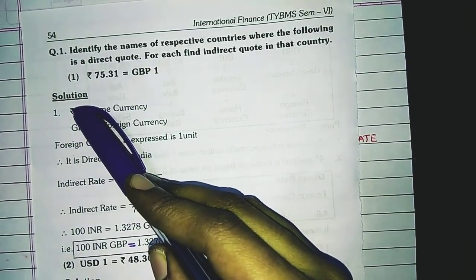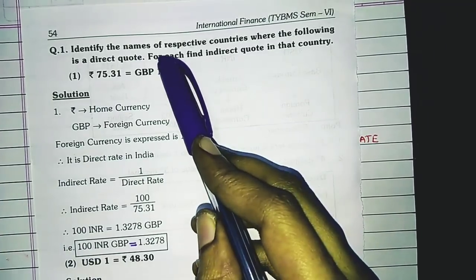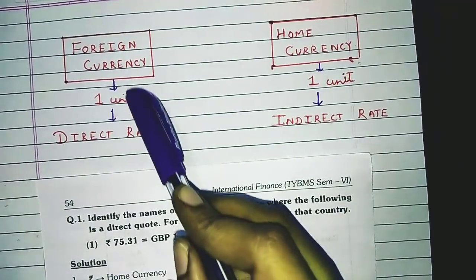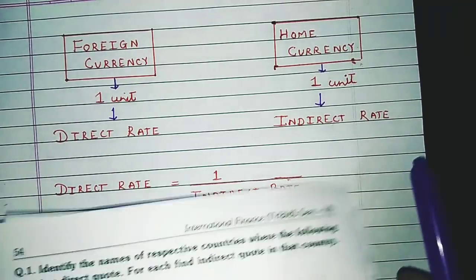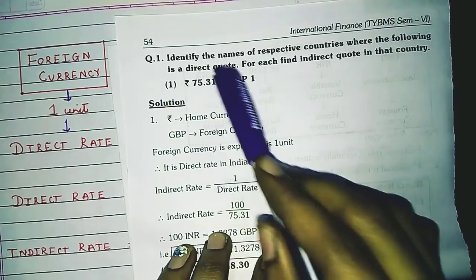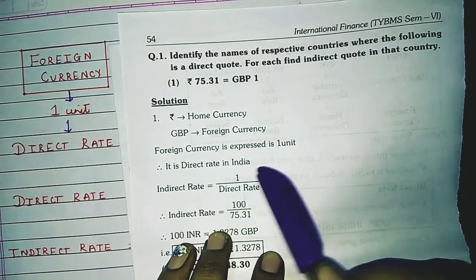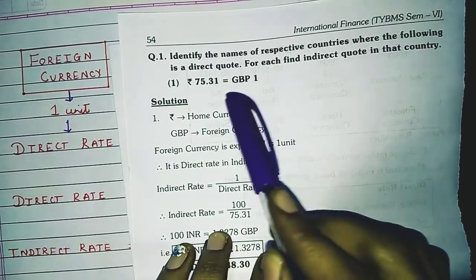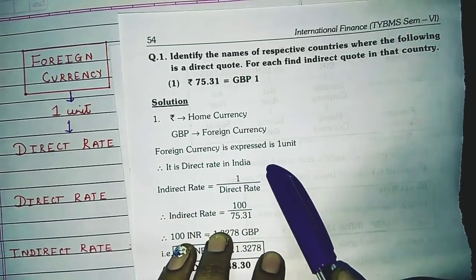The first example given is: Rupees 75.31 = GBP 1. We need to find the country where this is a direct quote. The rule is: whenever we express a foreign currency in one unit, that is the direct rate. Here, when I am in India, I am expressing Great Britain pound as one unit, so it is the direct rate in India. Rupees is the home currency and GBP is the foreign currency.